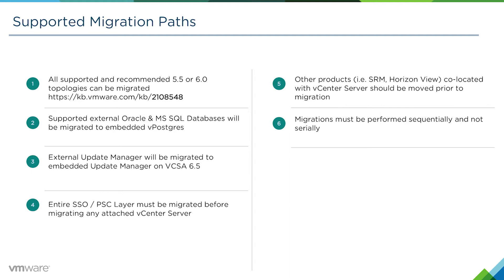We support all recommended topologies for both 5.5 and 6.0. To look at those supported topologies, see KB Article 2108548. We support migrating from an external Oracle or external Microsoft SQL database to the embedded vPostgres database. External Update Manager servers will be migrated to become embedded Update Managers on the vCSA 6.5. You must migrate your entire SSO or PSE layer first before migrating any of the vCenters, if the SSO or PSEs are external.